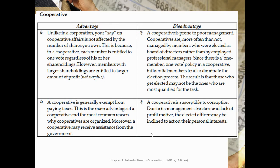A disadvantage is that a cooperative is prone to poor management. Cooperatives are more often than not managed by members who are elected as board of directors rather than by employed professional managers. Since there is a one-member, one-vote policy in cooperatives, influential members tend to dominate the election process. The result is that those who get elected may not be the ones most qualified for the task.